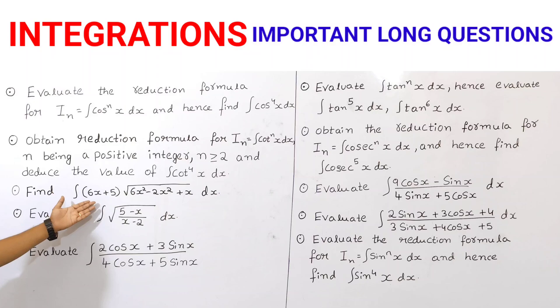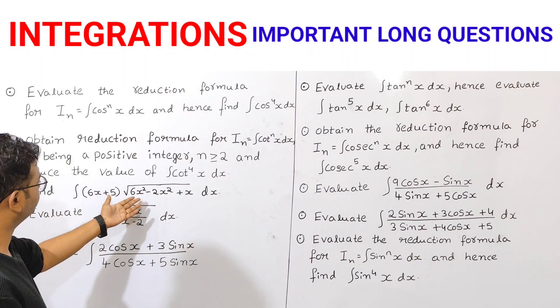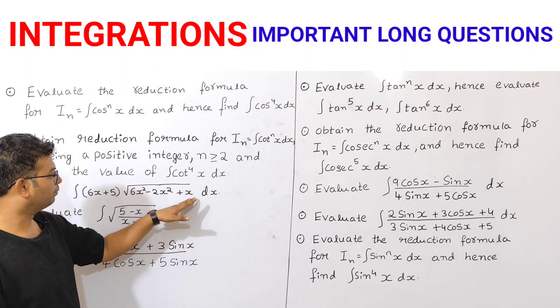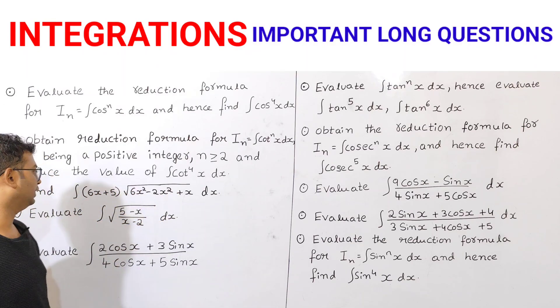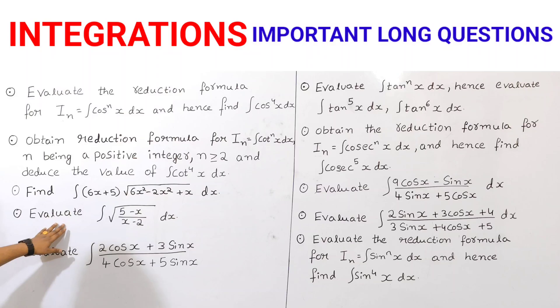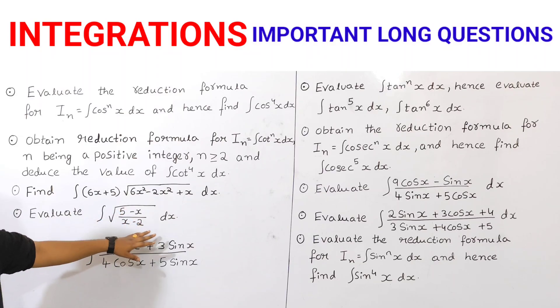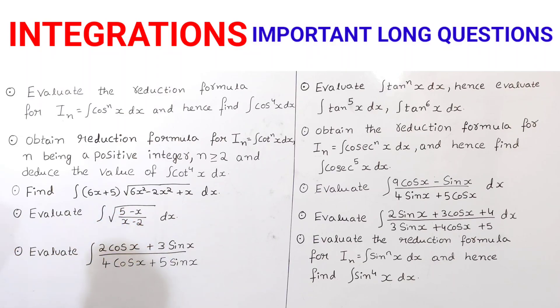Next, find integration of (6x + 5) under root of (6x squared minus 2x squared plus x) dx. Next, evaluate integration of root of (5 minus x) by (x minus 2).